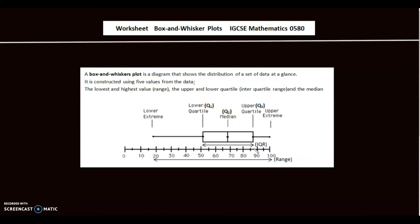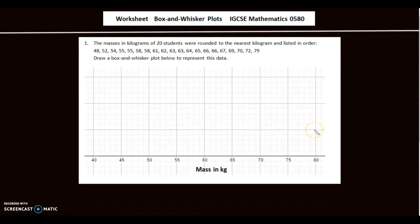The first question: the masses in kilograms of 20 students were rounded to the nearest kilogram and listed in order. Draw a box and whiskers plot to represent this data. The data is already in ascending order. We need the lowest value, which is 48, so I'll make a dot on 48.